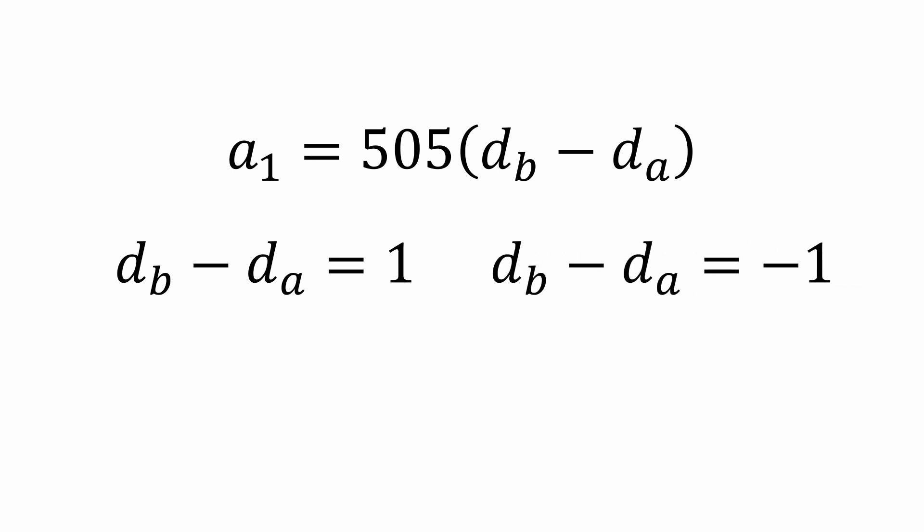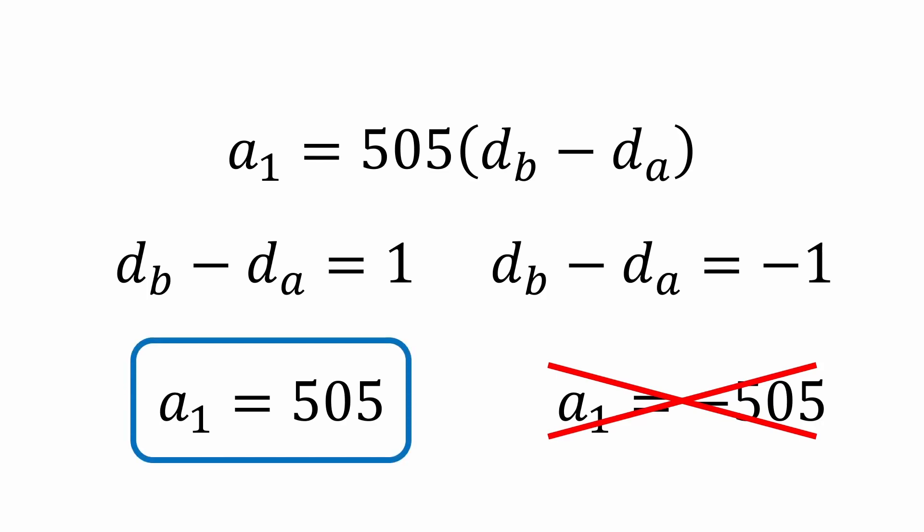When the difference is positive 1, A1 equals 505. When the difference is negative 1, A1 equals negative 505. But we can reject this value since Alice's sequence only involves positive integers. So the answer is 505.